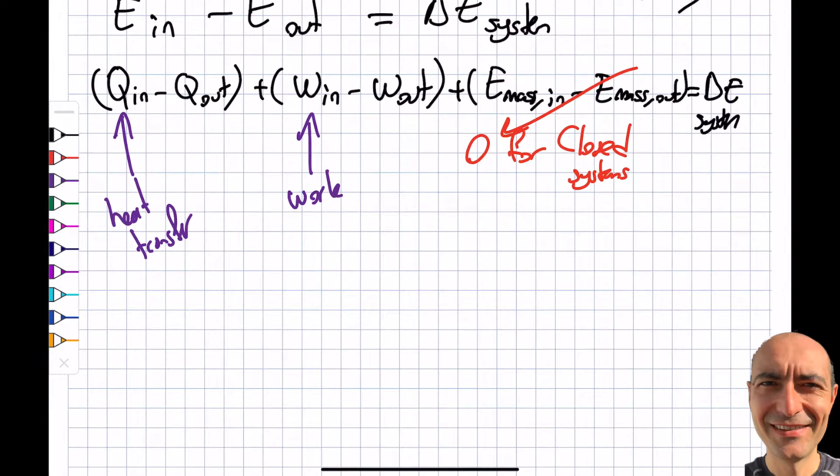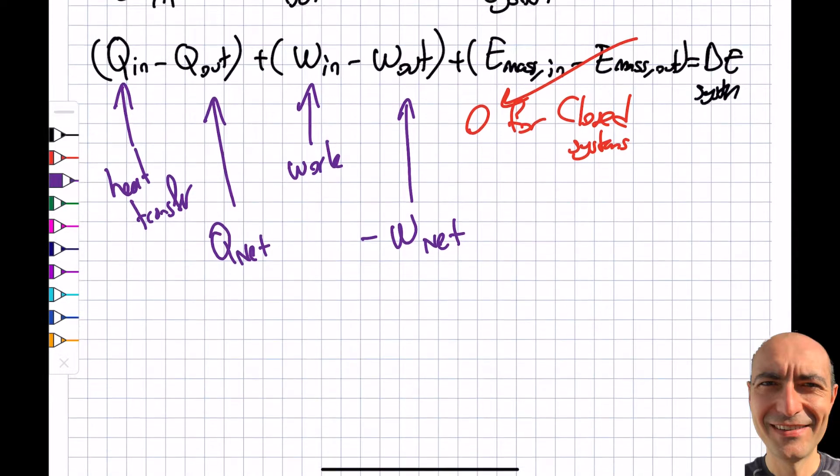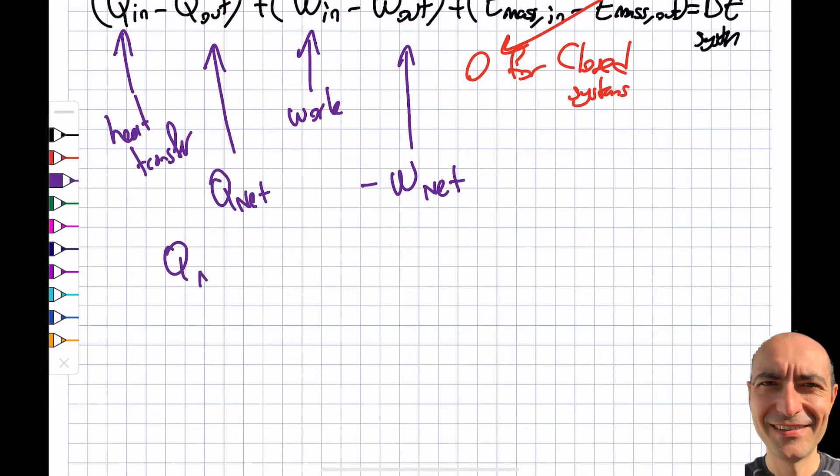I'm going to connect this to modules 2 and 3. In module 2, we called this Q_net, and we also called the negative of this minus W_net. If I rewrite it in a more convenient way: Q_net minus W_net equals delta energy of the system.